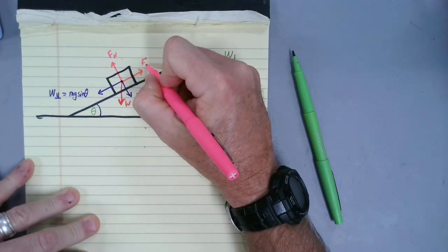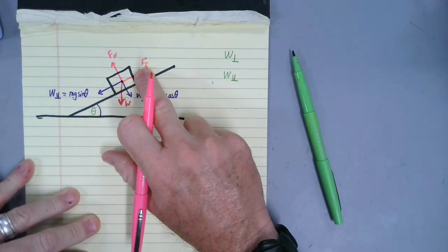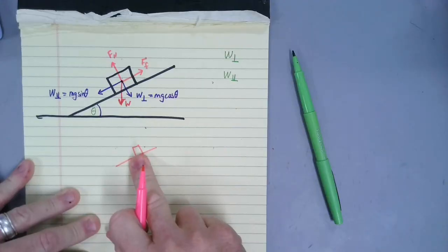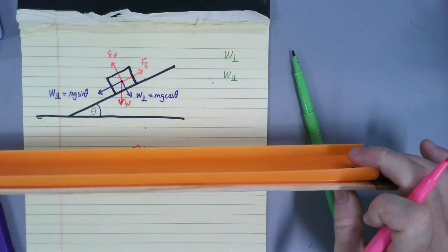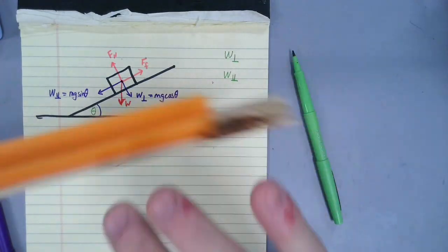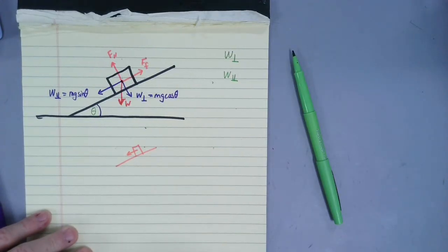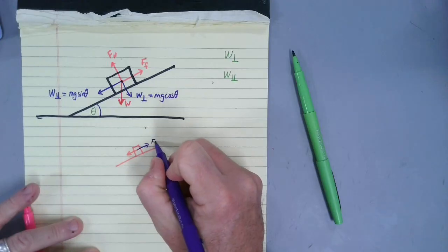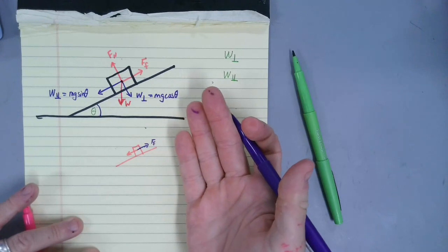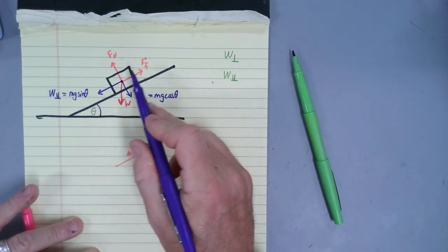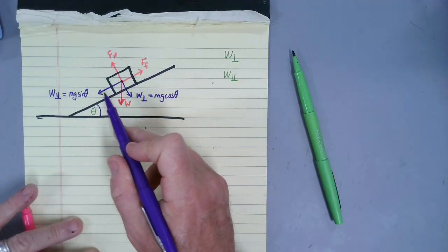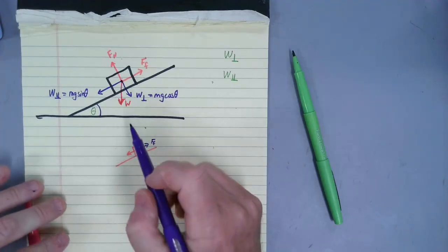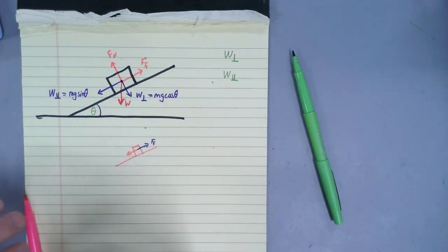There is also a frictional force that works against the block as it slides down the ramp. When the block was on the ramp but not sliding, there was still a parallel weight — a component of the weight pulling it down the ramp — but it wasn't moving because the frictional force was big enough to counteract it. If we get the ramp steep enough, the parallel weight force gets so big it overcomes the friction and the block starts to change its motion. Now, using this information, you're going to go to the problem set and draw free body diagrams with all forces and their values.